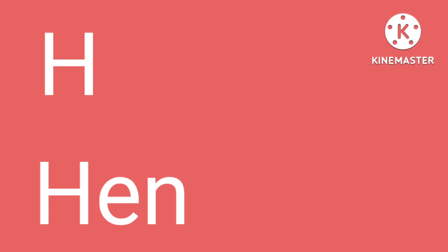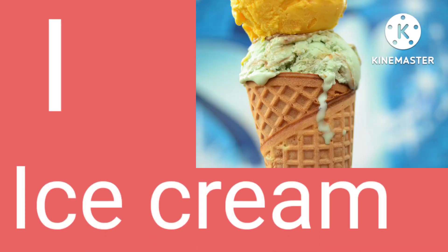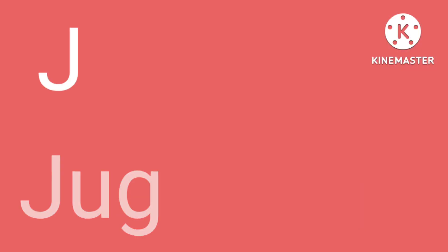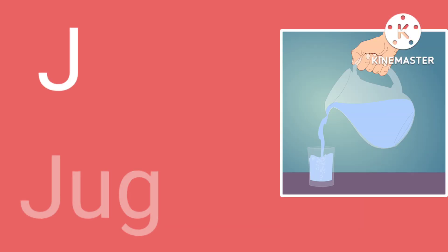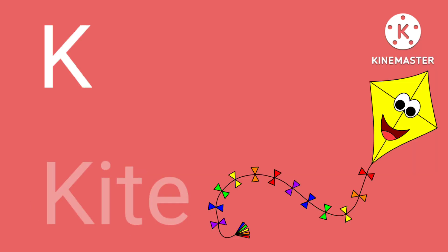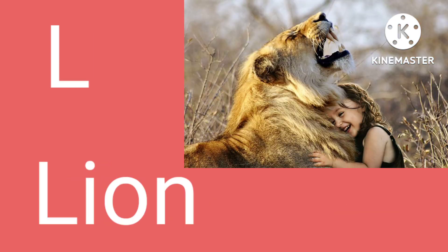I for ice cream, J for jug, K for kite, L for line.